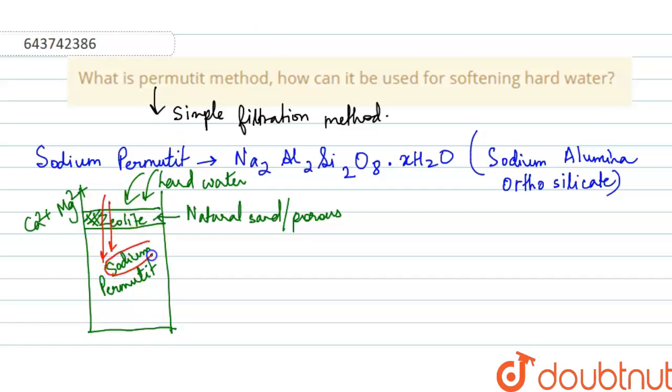Therefore the water that is entering will bond with sodium, isn't it? And the sodium permutite will be converted to Ca2+ and Mg2+ permutite. That can also take place.